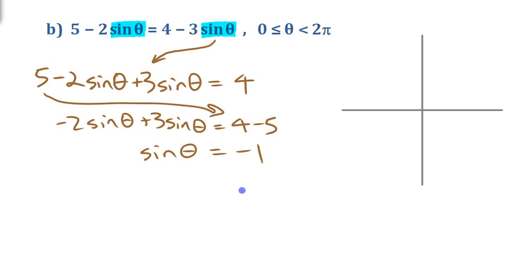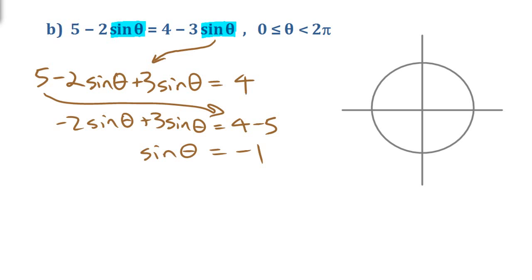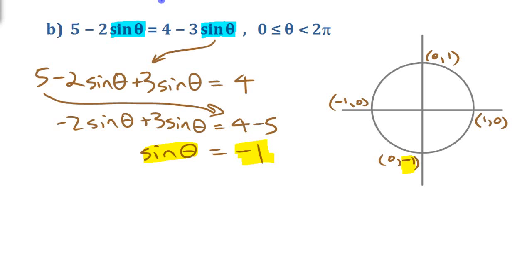Now we can find those values of theta. This is easiest using the unit circle since it's sine. On a unit circle the radius is 1, and sine is the y-coordinate. The coordinates at the axes are (1,0), (0,1), (-1,0), and (0,-1). We're looking for where sine equals negative 1, meaning where the y-coordinate is negative 1. That's only the bottom point, corresponding to 270 degrees, or in radians 3 pi over 2. So theta equals 3 pi over 2 is the single solution.